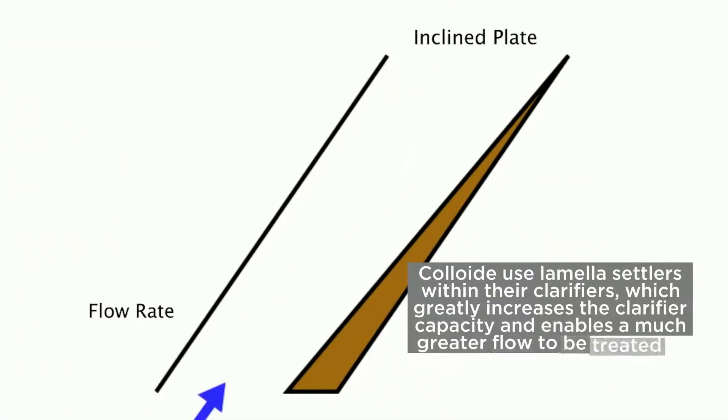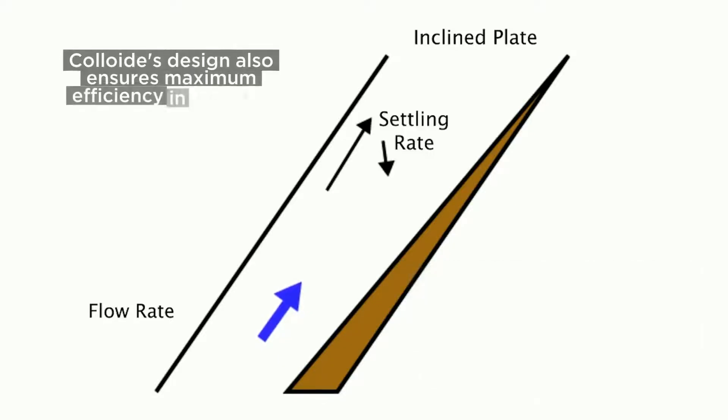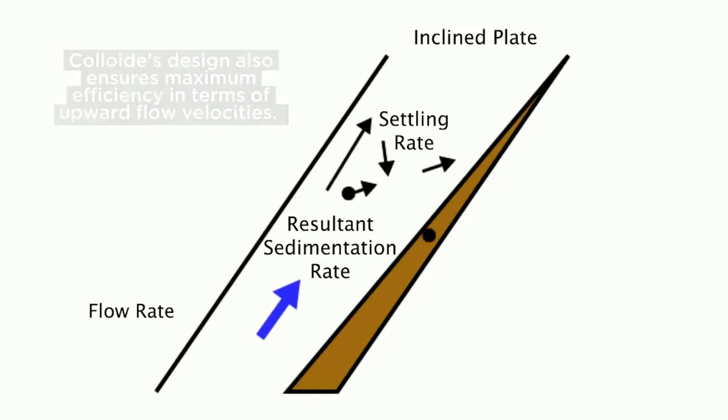Colload use lamella settlers within their clarifiers which greatly increases the clarifier capacity and enables a much greater flow to be treated in the same footprint as conventional clarification. Colload's design also ensures maximum efficiency in terms of upward flow velocities.